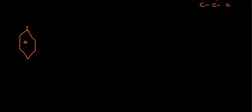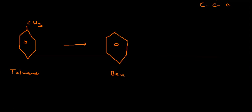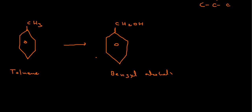Now suppose you have toluene — CH₃ group over benzene — and from this toluene you want to convert into benzyl alcohol. Benzyl alcohol means CH₂OH. So if you want benzyl alcohol, Br should be added. Benzyl means CH₂OH — so benzyl alcohol is the one with CH₂OH, not the one I initially drew, sorry.